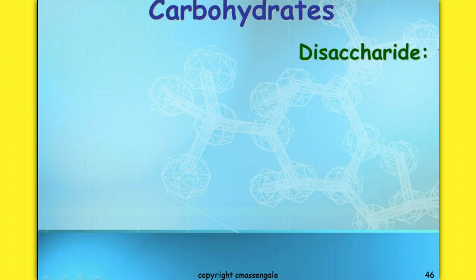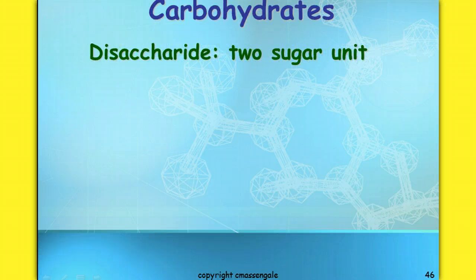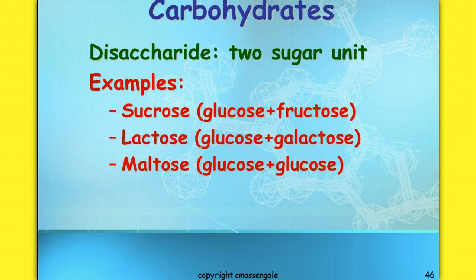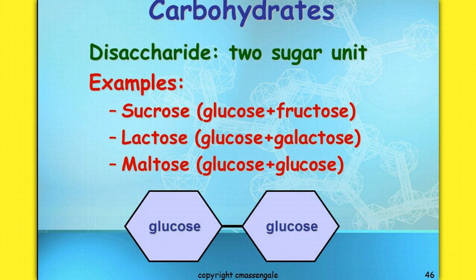A disaccharide refers to two sugar units — di means two. Examples include sucrose, lactose, and maltose. They're formed because they are two simple sugars, two monosaccharides, combined to make a larger sugar molecule. For instance, maltose is glucose and glucose.